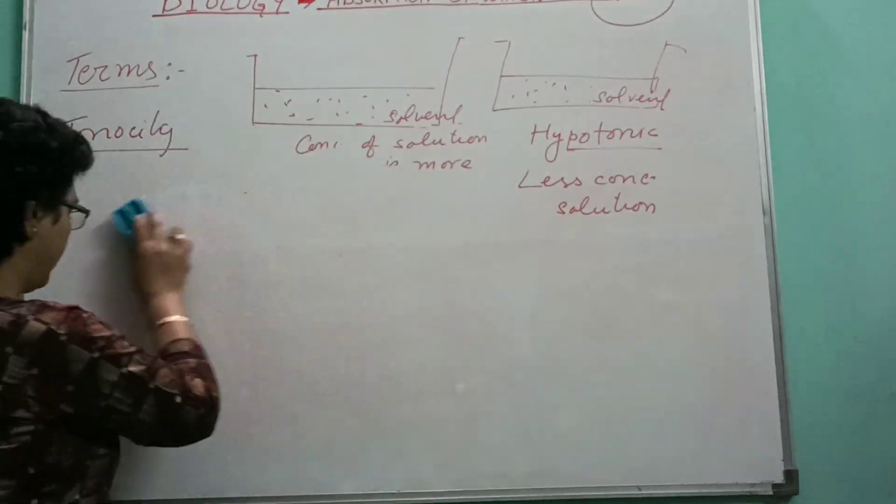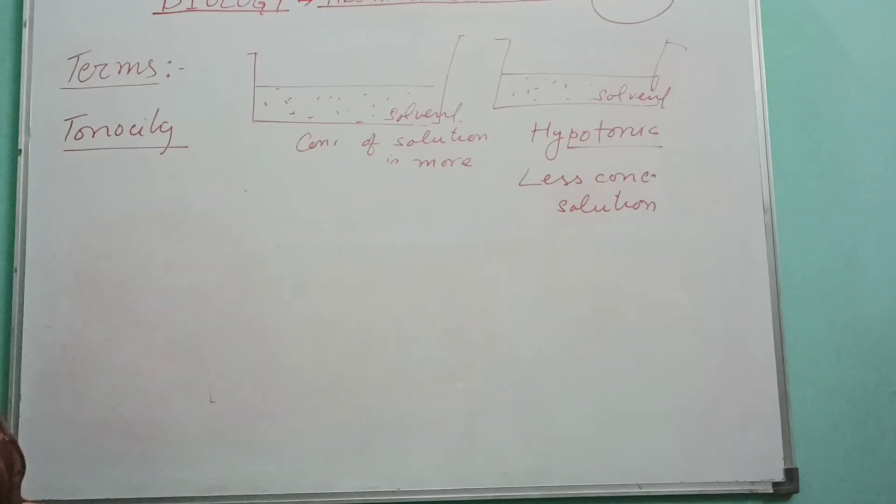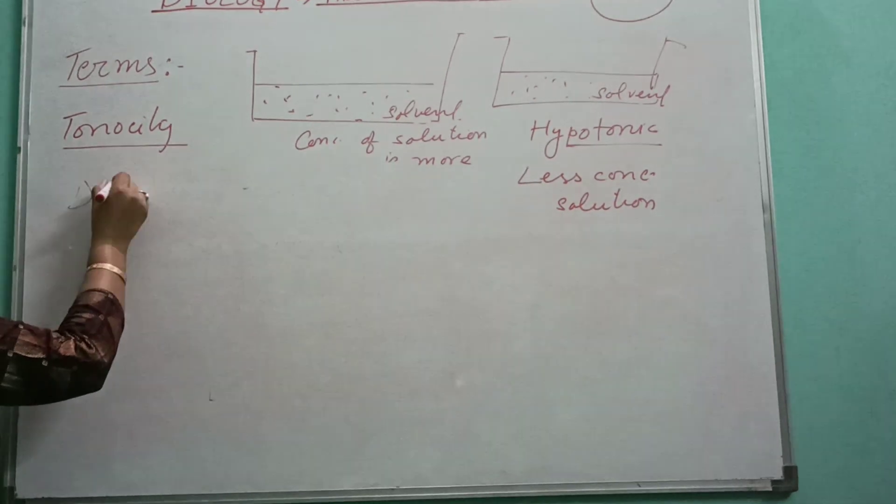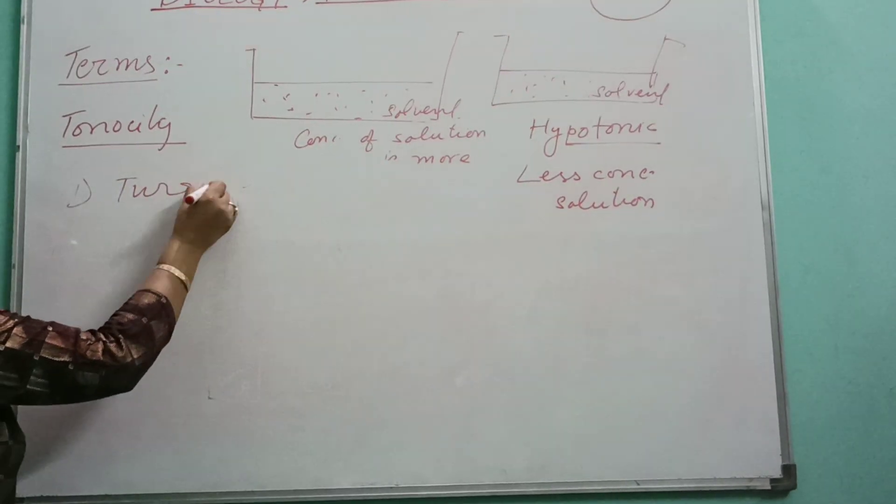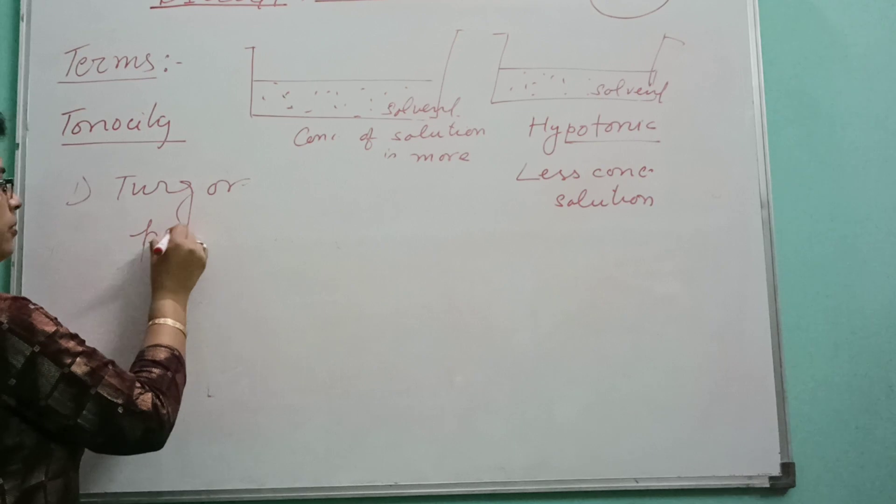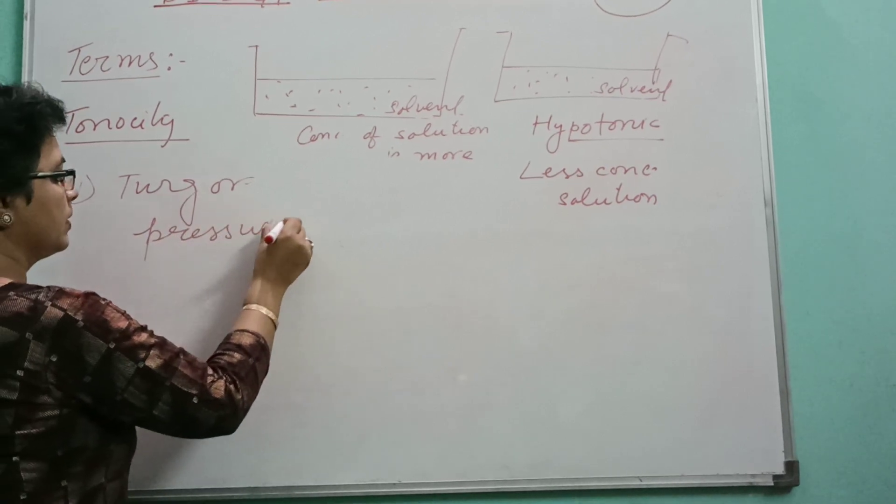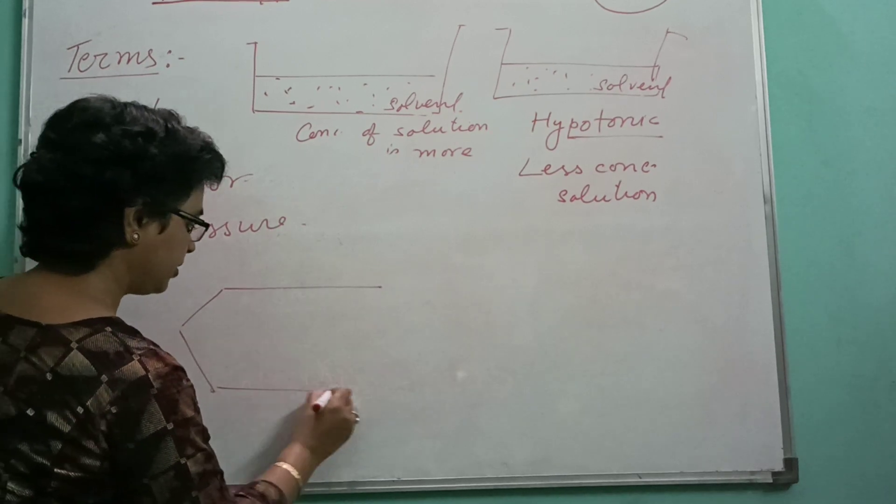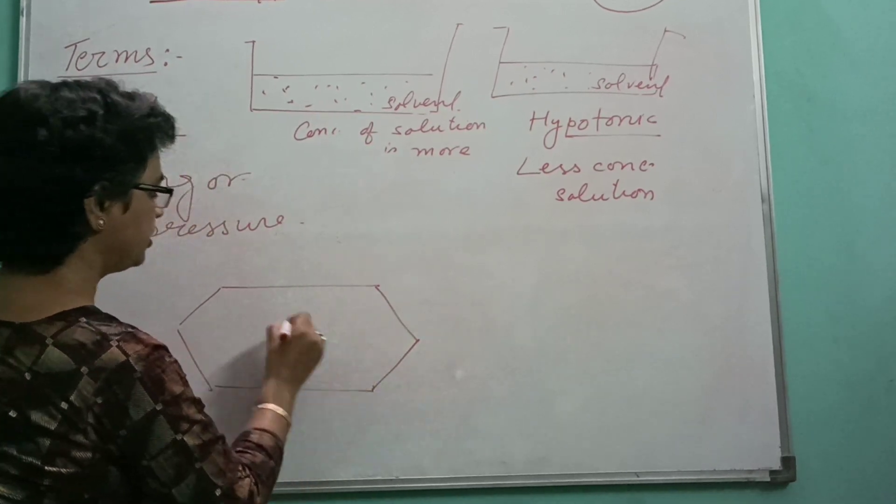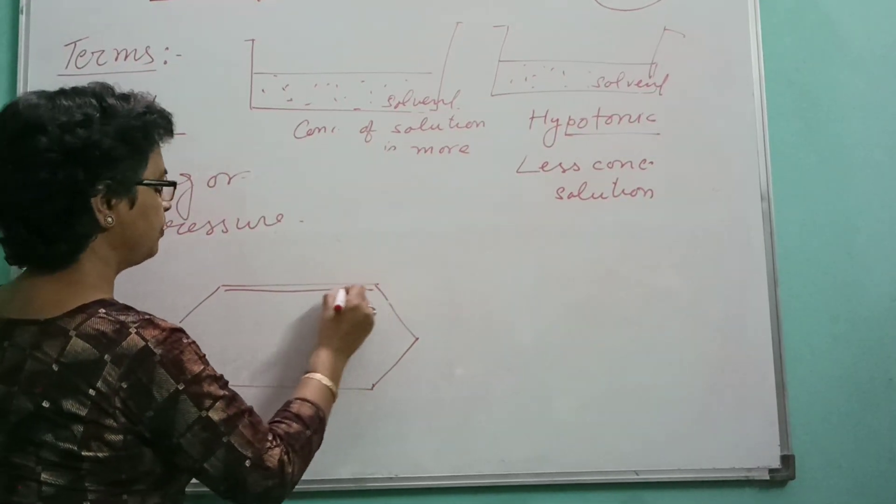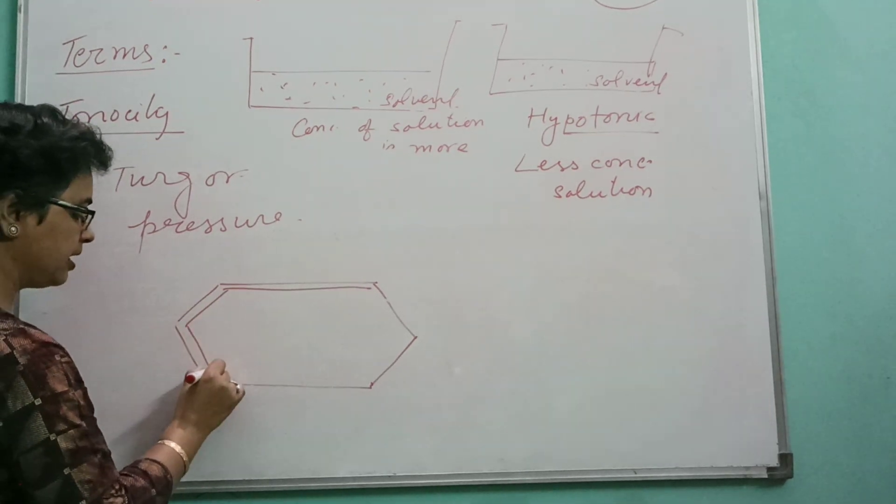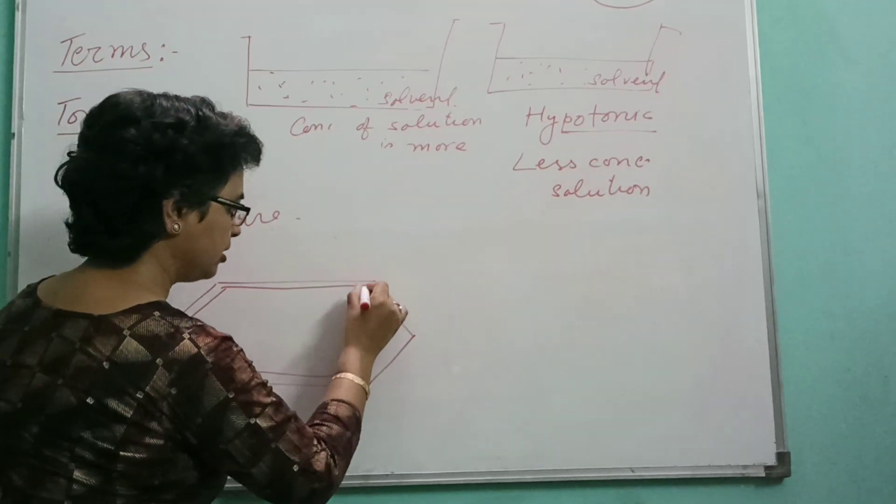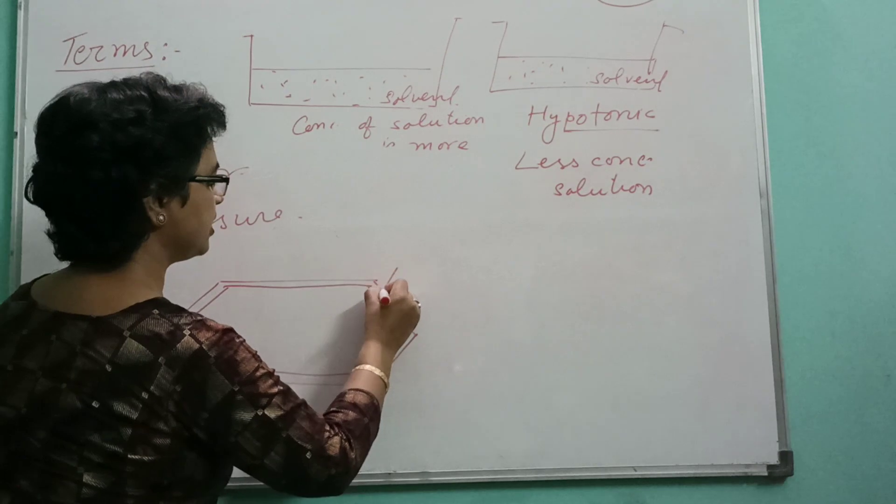Next term is turgor pressure, T-U-R-G-O-R. Keep it in your mind that this turgor pressure is there only into the plant cell. This type of pressure is not there into the animal cell because of the absence of cell wall.